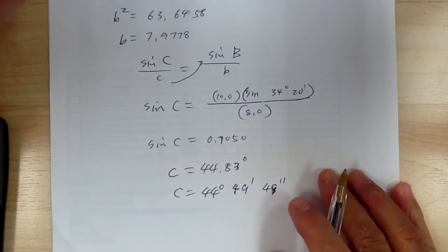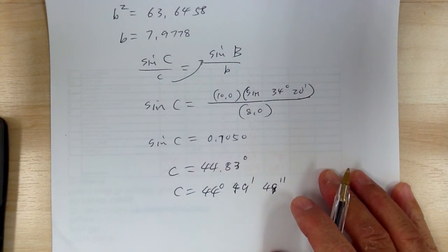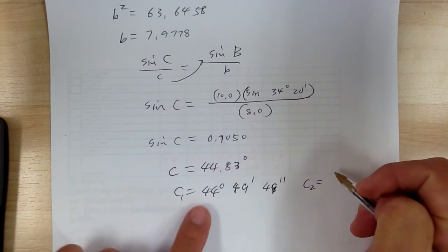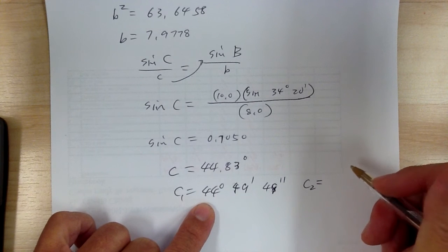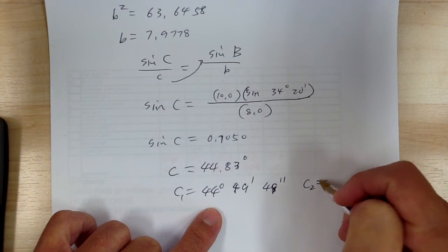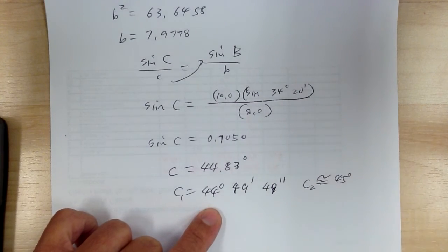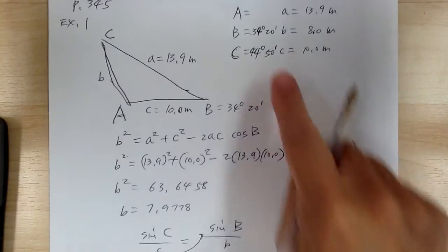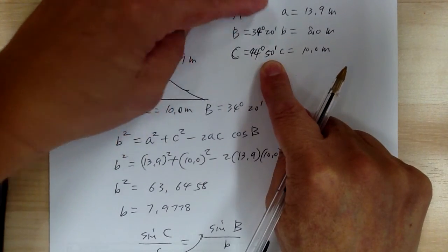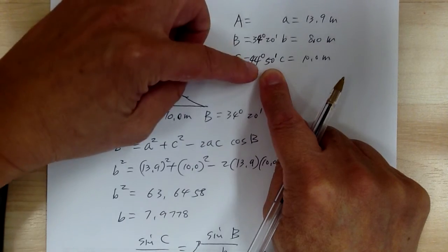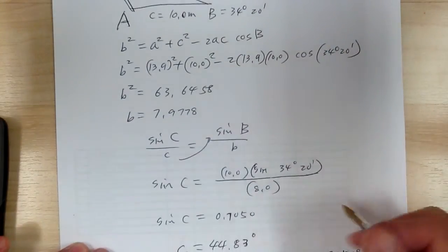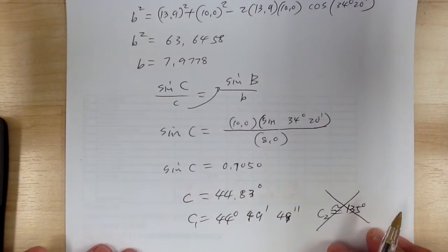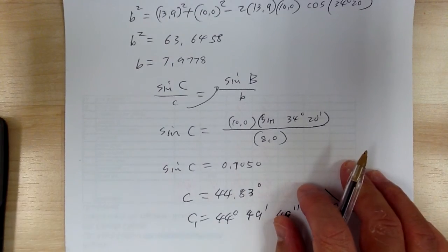Now remember, when you use the law of sine to get an angle you're supposed to get a second angle. But if you get the other angle — about 135 degrees — and you already have 34 degrees, adding those would be way more than 180, so it's impossible. That's why you want to find the small angle first, because the second case is impossible. That way you don't have to deal with the second case.